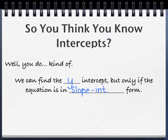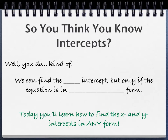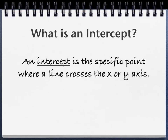Today our focus is a little broader than that. Today we want to learn how to find intercepts — both the x and the y — in any form of a linear equation. So what do I mean when I say an intercept? Let's back up and talk about that. An intercept is a very specific point. It is a point where a line crosses the x-axis or the y-axis.